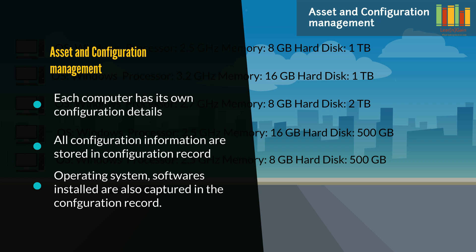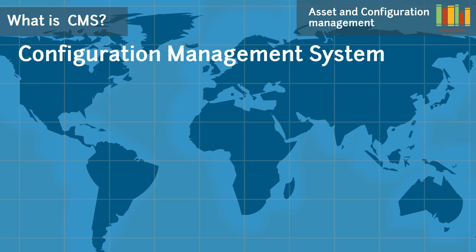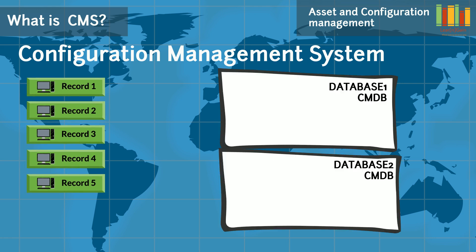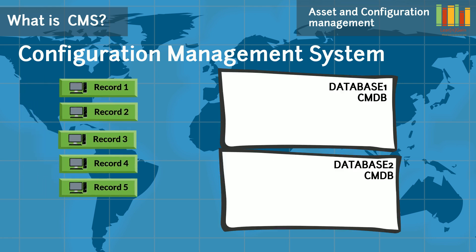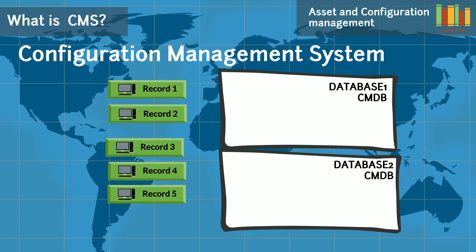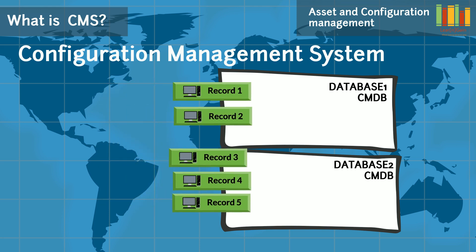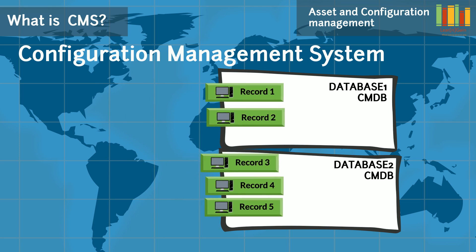Software information like operating system and software applications installed on the computer is also included. One of the most common terms in configuration management is CMS, which stands for Configuration Management System. Let us see how these five configuration records are stored in CMS. A configuration item is referred to as a CI. Each CI record will be stored in a database, referred to as Configuration Management Database, commonly known as CMDB.